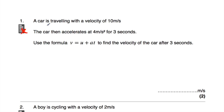Question number one: a car is travelling with a velocity of 10 metres per second, and then the car accelerates at 4 metres per second squared for 3 seconds. Use the formula v equals u plus at to find the velocity of the car after 3 seconds.